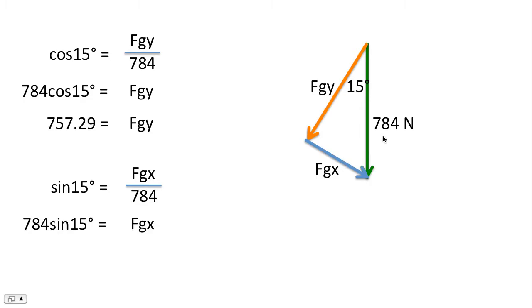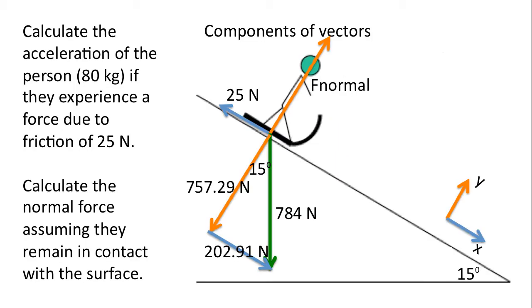Cross multiplying, and working through the math, we end up with 202.91 newtons. And now we'll label those values in the diagram.